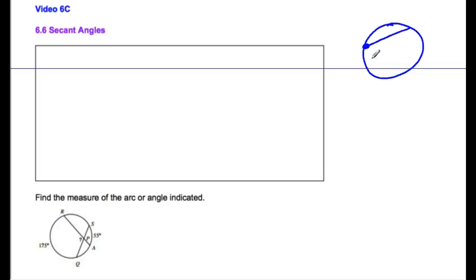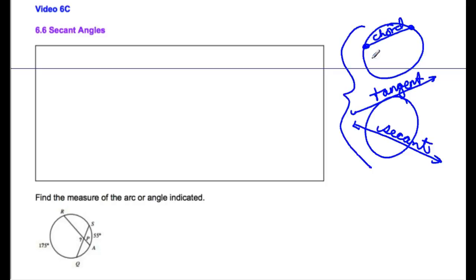We've already talked about the chord. We've talked about a tangent that just hits once like this, and then a secant line or segment hits the circle twice on the interior. I'm going to write secants and angles, that's probably a better way to write it.